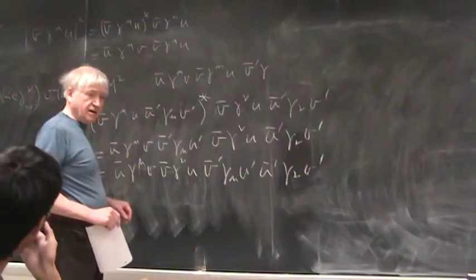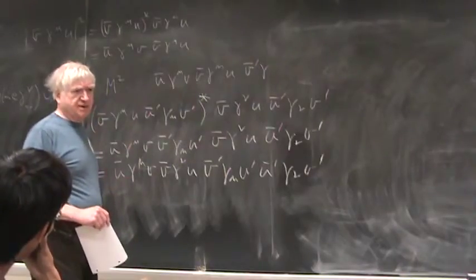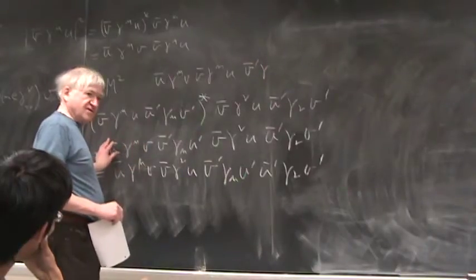And what we're going to have then for |M|², inside |M|², what we're going to have then is ū γ^μ v, v̄ γ^μ u, and then the muon part is going to be - let me do this thing a little more carefully. So what we've got is v̄ γ^μ u, ū' γ_μ v' star.